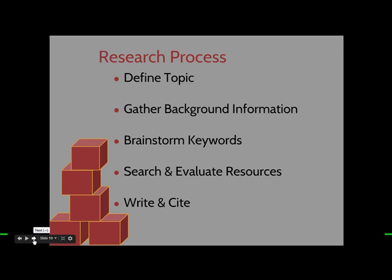The research process is made up of a few steps. First, you want to define your topic. Some questions to ask yourself: What do I know about a topic? What do I not know? What do I need to learn to get my hypothesis? What terminology do I need to learn? What kind of sources or data do I think I need? And is my topic narrow enough? These are all questions you want to ask yourself as you're defining your topic.